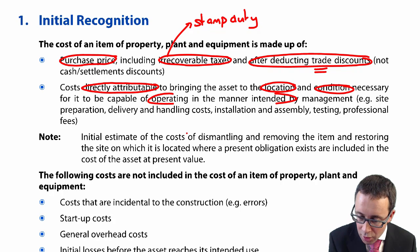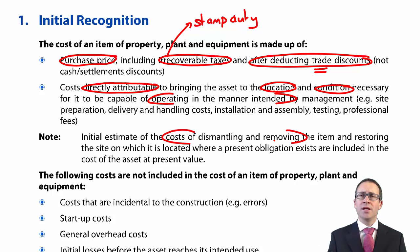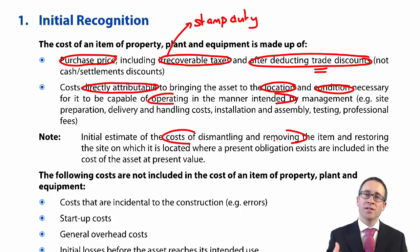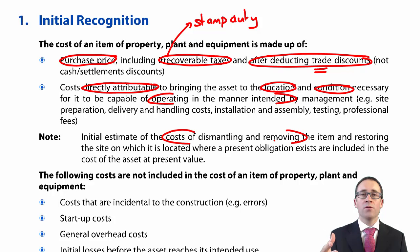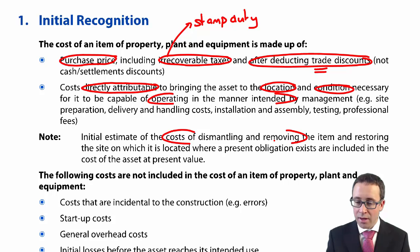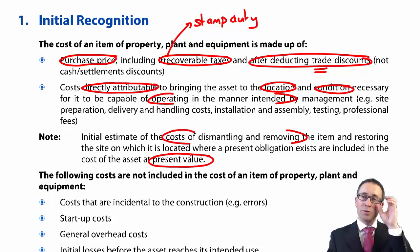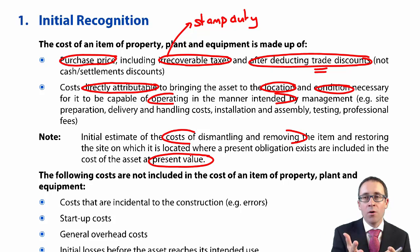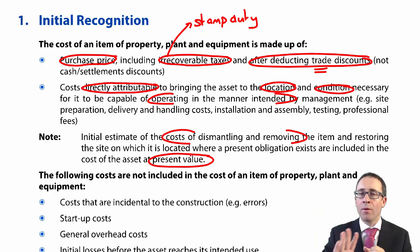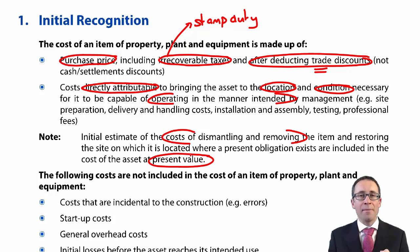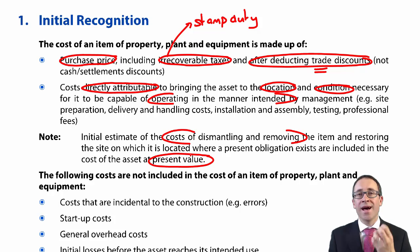You could also have costs of dismantling and removing the item. The common example is an oil rig — you build it and in 50 years you're legally obliged to dismantle it. You capitalise that cost today, even though you won't incur it for 50 years. The key is that you capitalise it at its present value — so if you have to pay $10 million in 50 years, that might only be around half a million in today's terms.